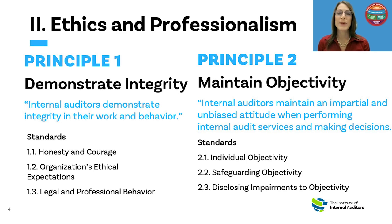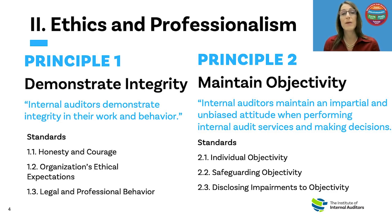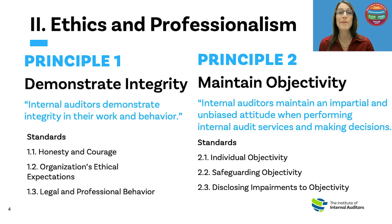Standard 1.2, organization's ethical expectations, describes how internal auditors must assess and make recommendations to improve the organization's ethics-related objectives, policies, and processes. It also describes what internal auditors should do when they observe behavior that is inconsistent with the organization's ethical expectations. Standard 1.3, legal and professional behavior, is similar to what's in the current code of ethics regarding illegal harmful behaviors or behaviors that might be discreditable to the organization or the internal audit profession.